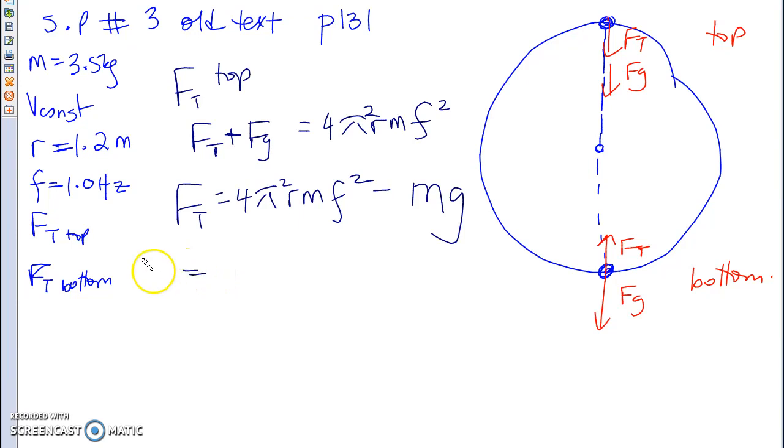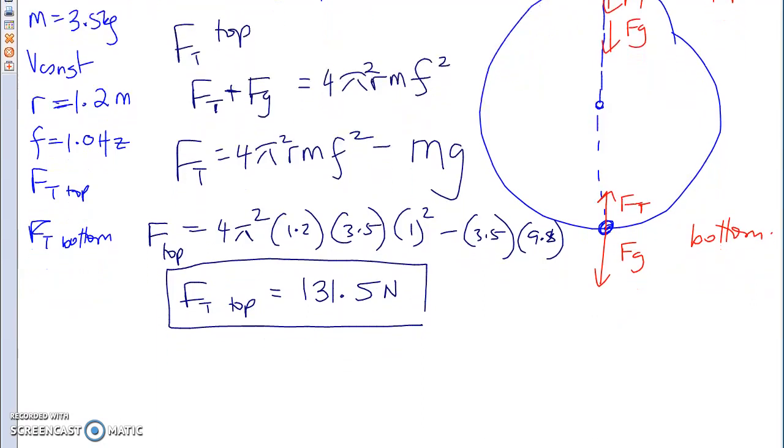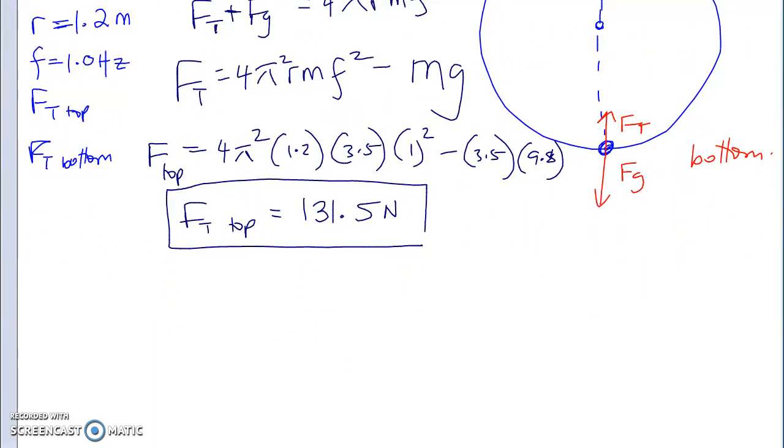In fact, you could have a situation where you're going at a minimum velocity where the tension at the top is literally zero. It could happen. You might have questions like that in your textbook or in the future. Hint, hint. So FT equals to 4π²RmF² minus FG or minus MG. So your FT at the top is going to be 4π² times R, which is 1.2, M, which is 3.5, frequency, which is 1 squared minus 3.5 times 9.8, and what do we end up with at the top from yesterday? 131.5 Newtons at the top.